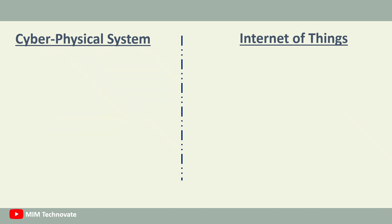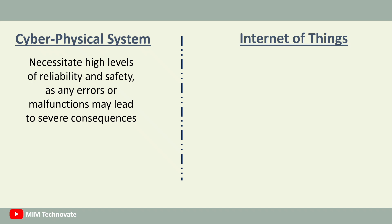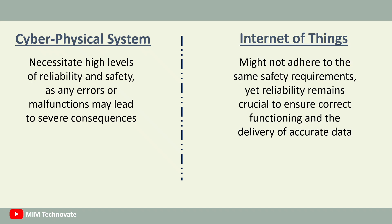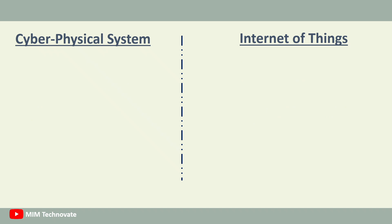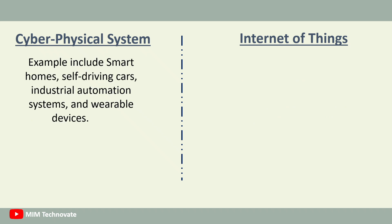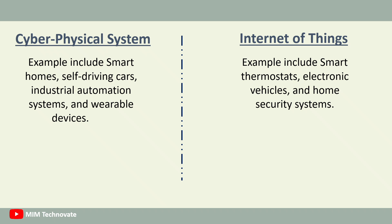Cyber-physical systems necessitate high levels of reliability and safety, as any errors or malfunctions may lead to severe consequences. Internet of Things devices might not adhere to the same safety requirements, yet reliability remains crucial to ensure correct functioning and the delivery of accurate data. Examples of cyber-physical systems include smart homes, self-driving cars, industrial automation systems, and wearable devices. Examples of Internet of Things include smart thermostats, electronic vehicles, and home security systems.